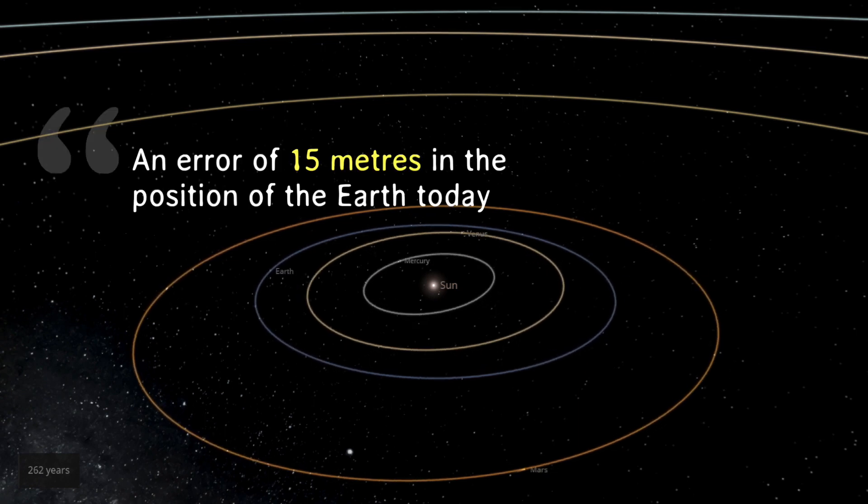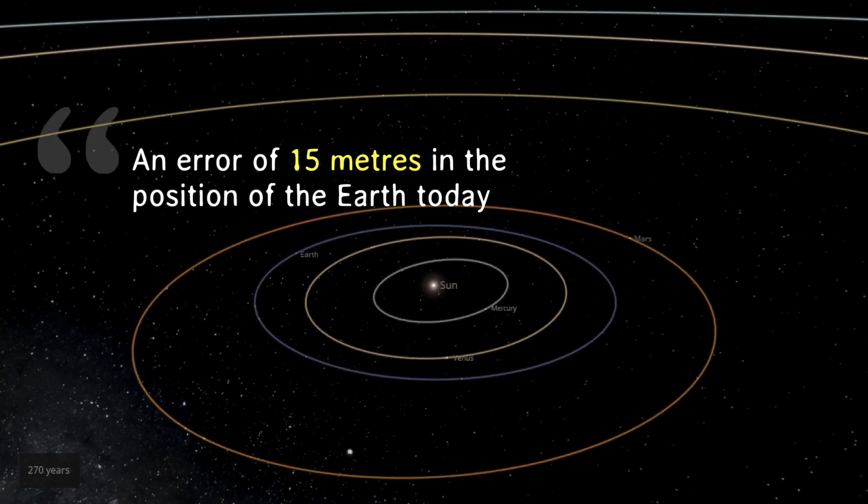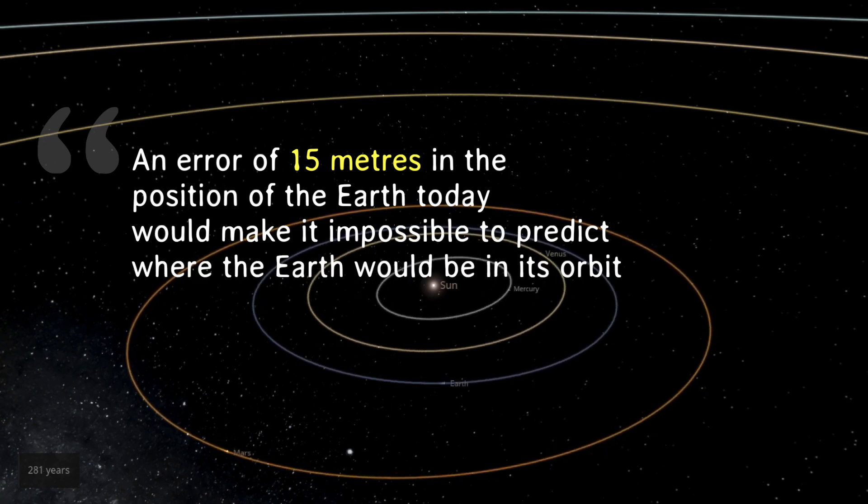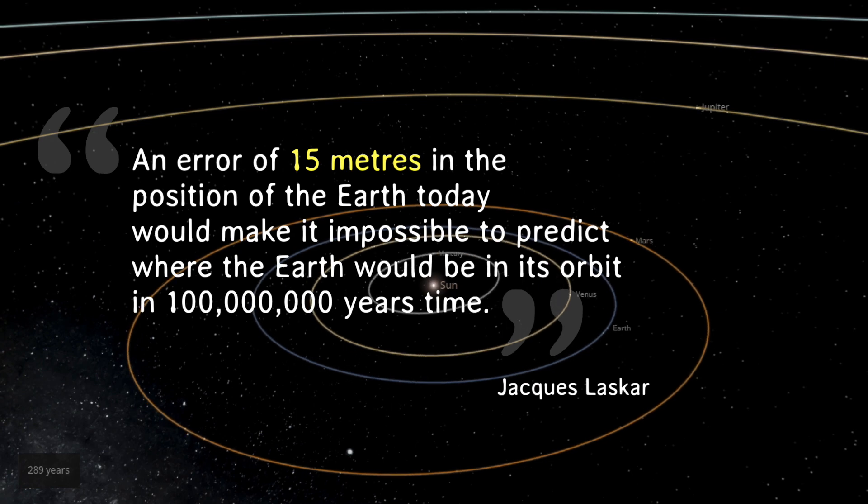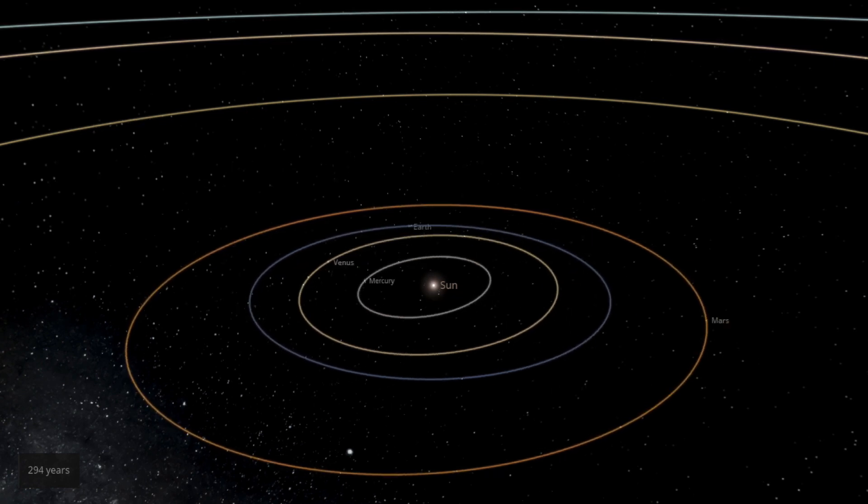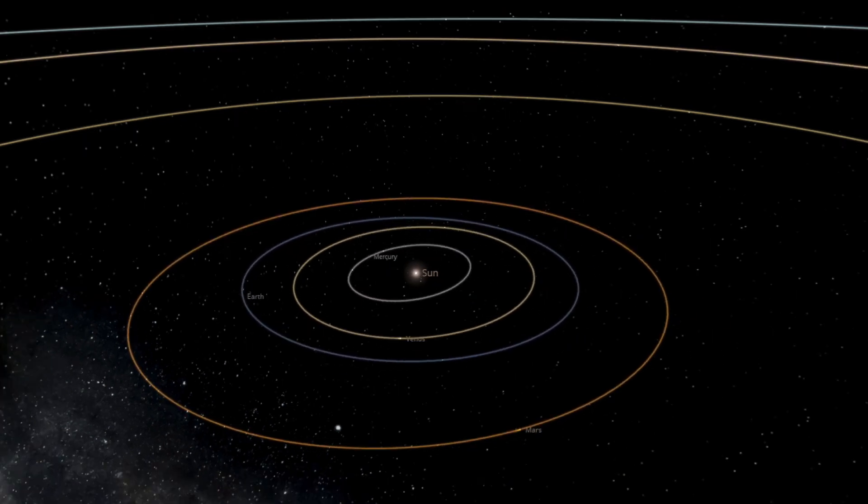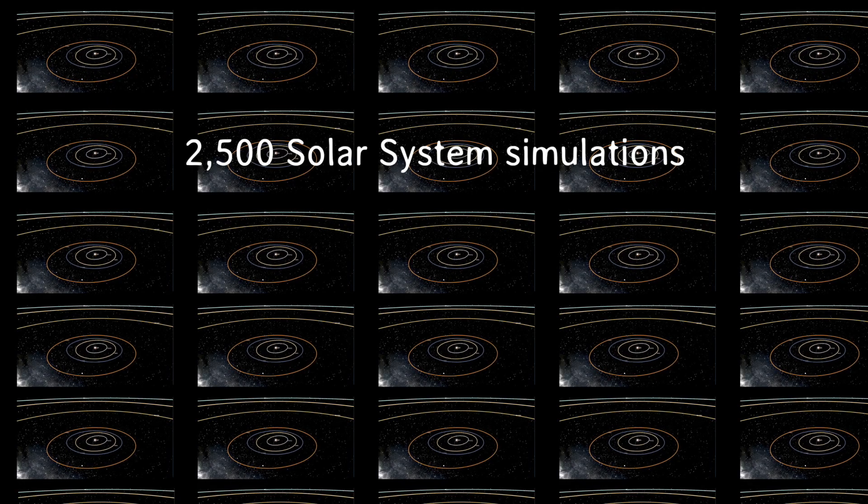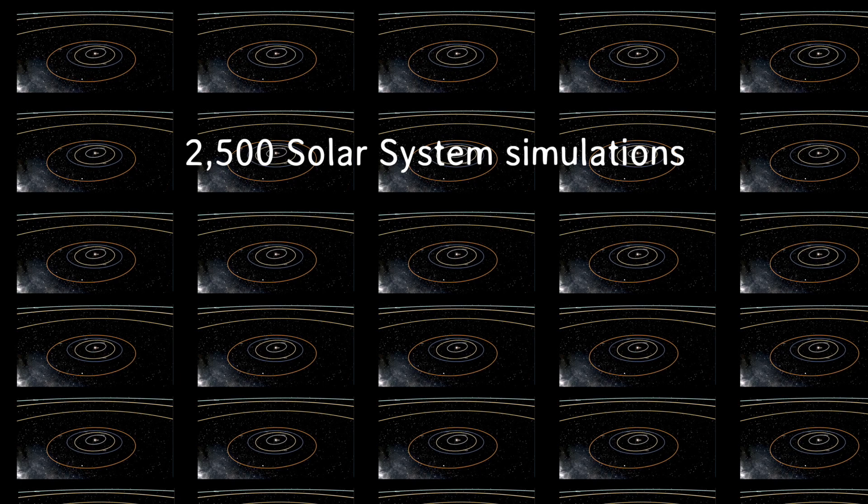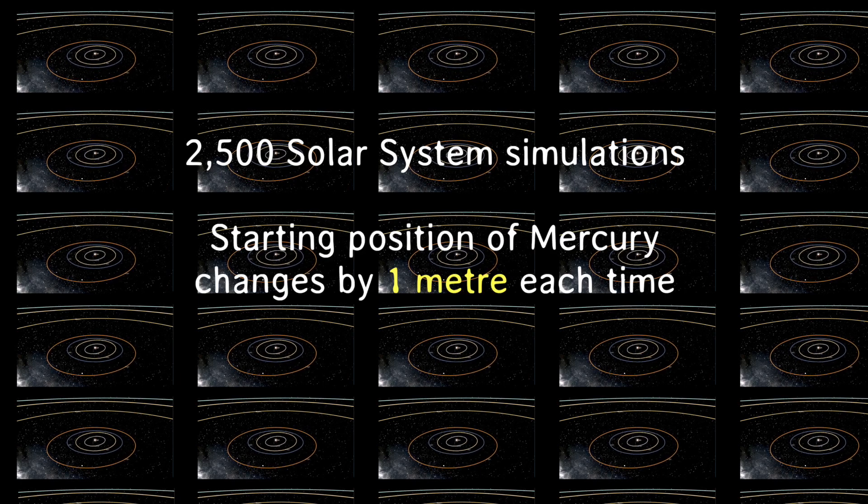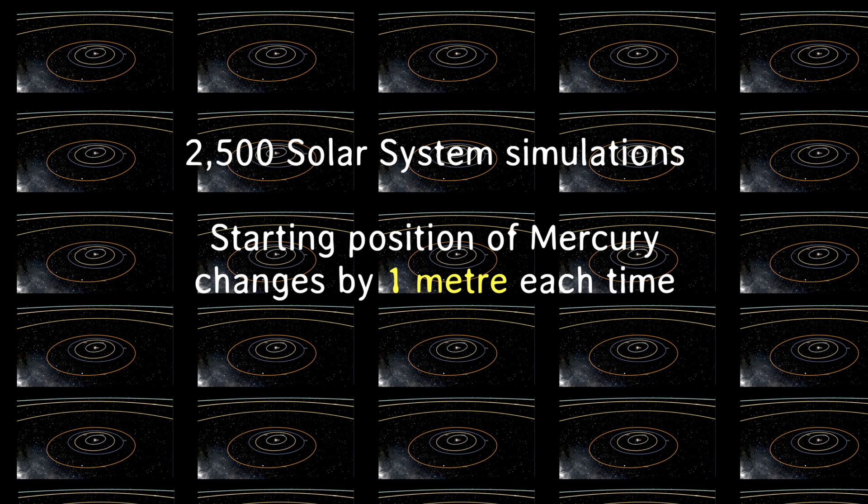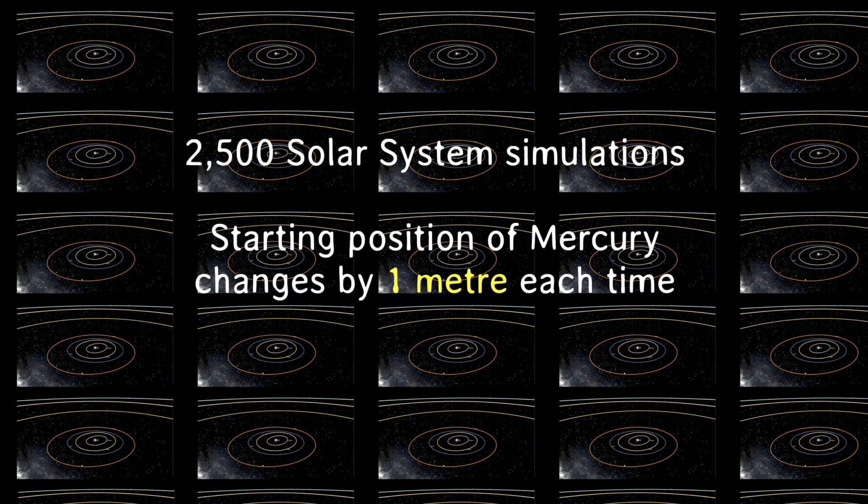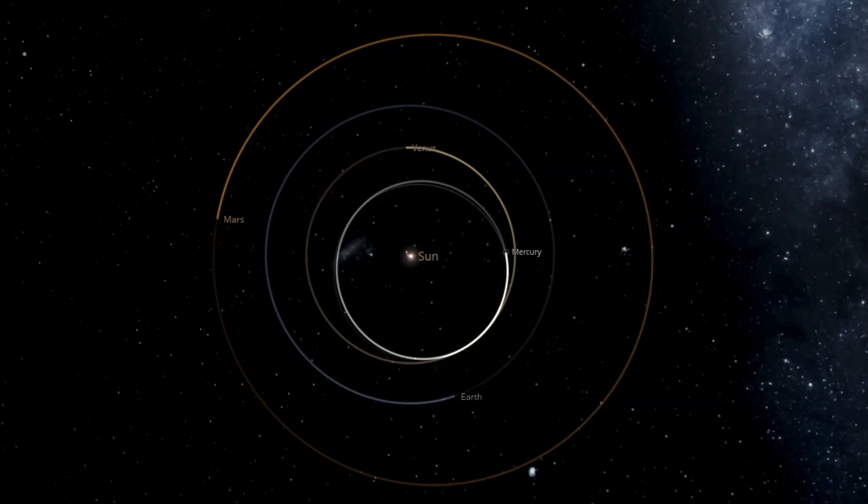He said, an error of 15 meters in the position of the Earth today would make it impossible to predict where the Earth would be in its orbit in a hundred million years' time. In 2009, Laskar and his colleague Gastineau did two and a half thousand solar system simulations with identical initial conditions, except that they changed the starting position of Mercury by one meter each time. That tiny difference amplified over hundreds of millions of years into wildly different states of the solar system.